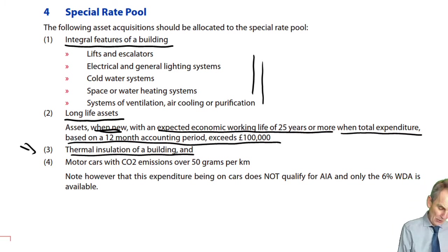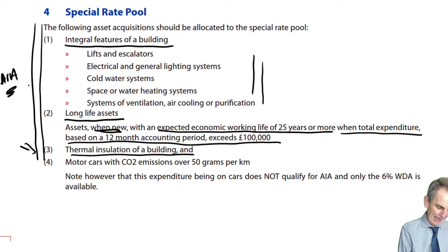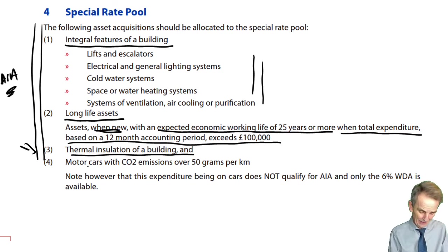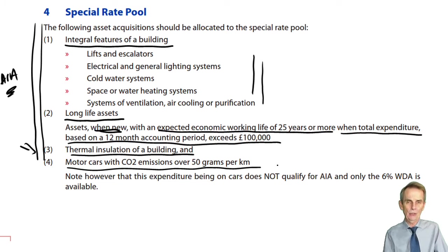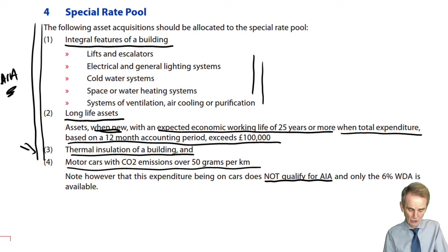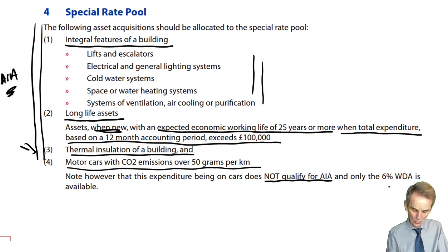Those first three categories are expenditure items that would rank for AIA. But we learnt last time about one particular asset that would always be allocated to the special rate pool: motor cars with CO2 emissions above the 50 grams per kilometre limit. The point about cars is that they do not qualify for AIA. So remember that these motor cars with higher CO2 emissions don't get AIA; they will go to the special rate pool, where only the 6% WDA is available.